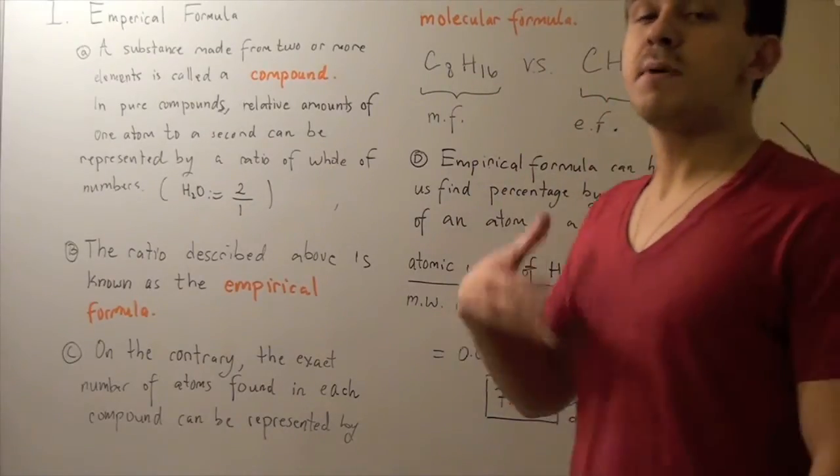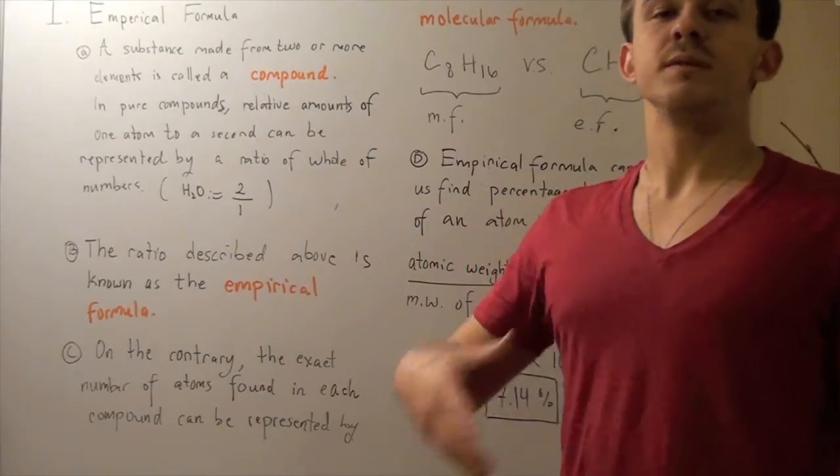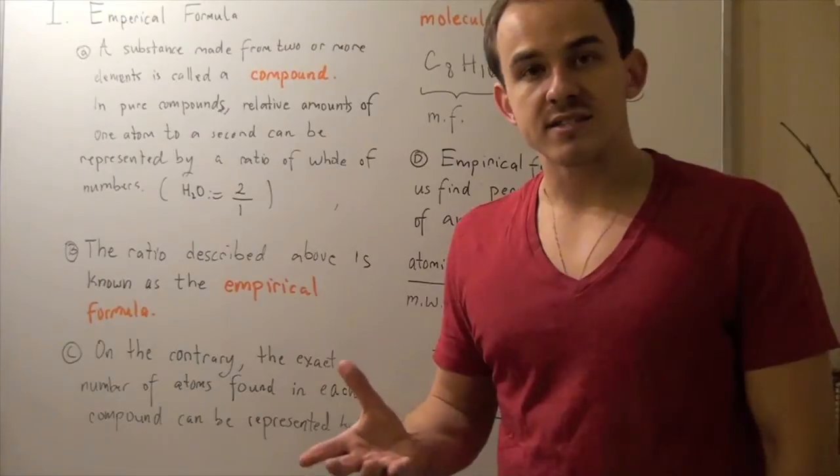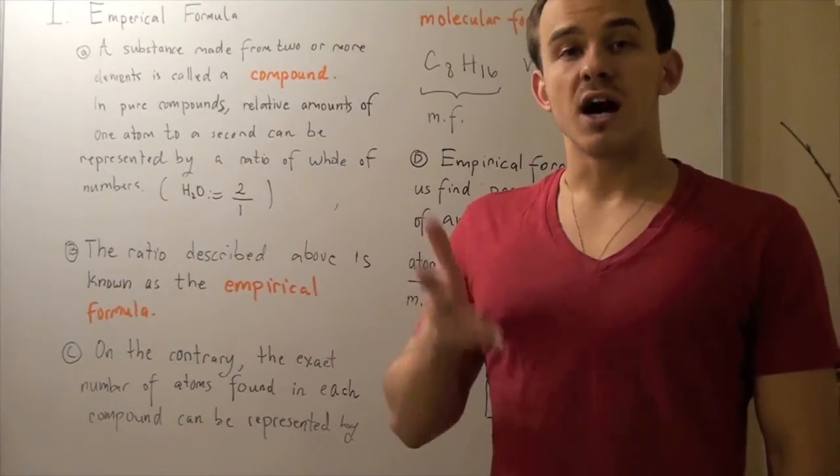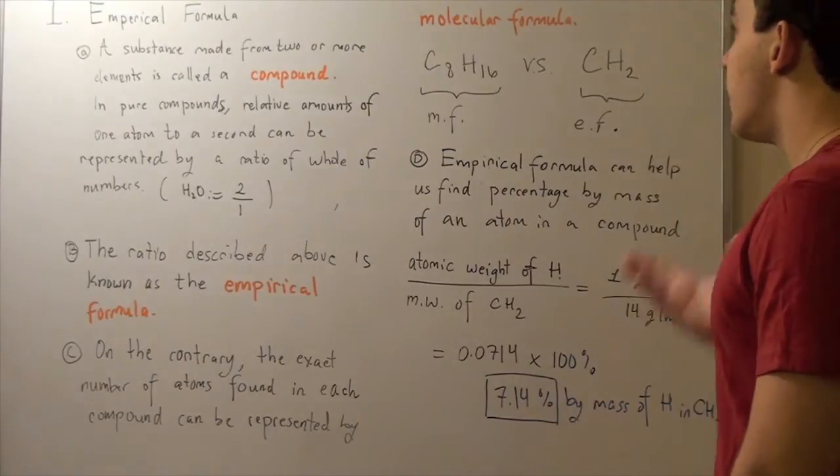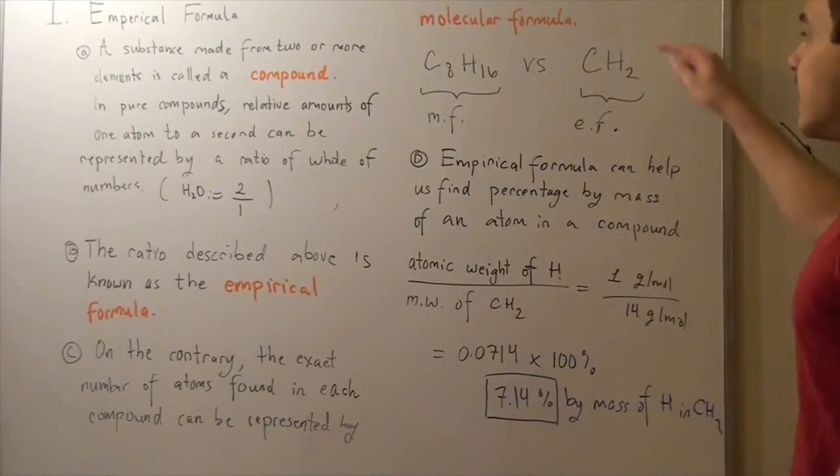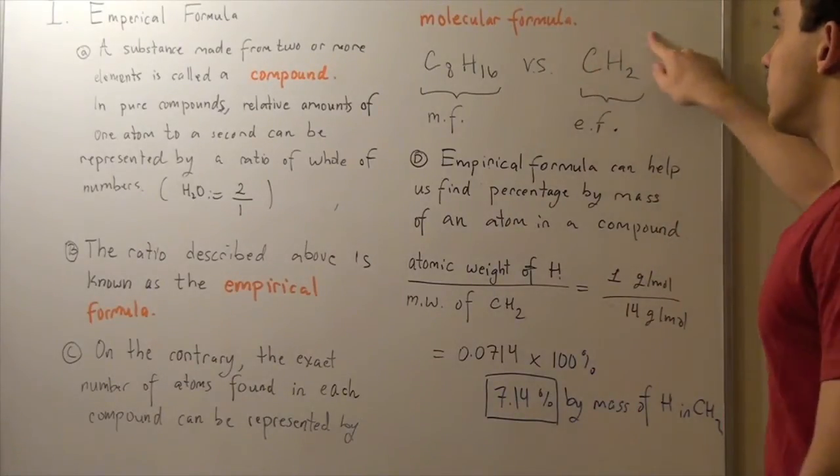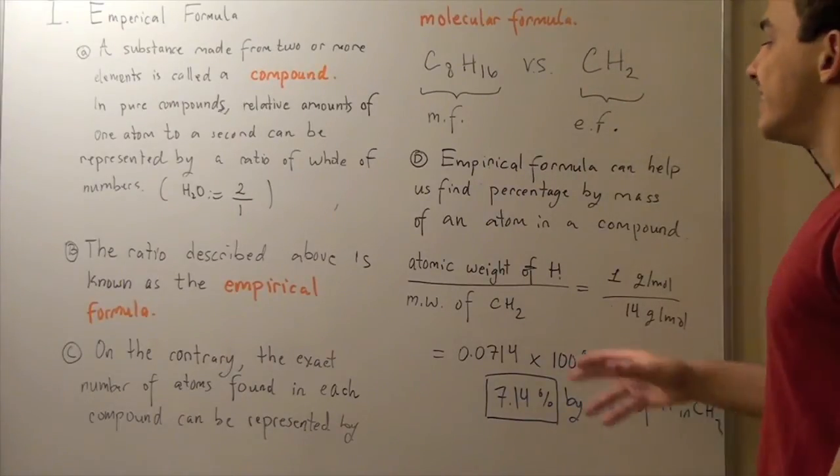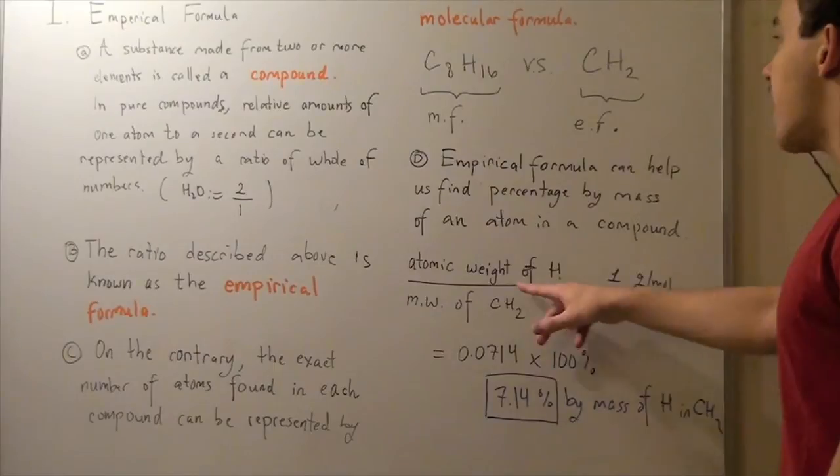Now why is an empirical formula useful? Well, an empirical formula can be used to find the percent by mass of any atom in our compound. Now let's look at this example again. How can we find the percent by mass of hydrogen in our molecule, in our compound?